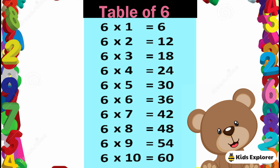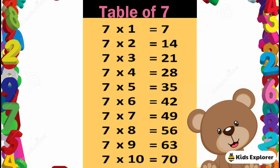Table of 6. 6 1's are 6, 6 2's are 12, 6 3's are 18, 6 4's are 24, 6 5's are 30, 6 6's are 36, 6 7's are 42, 6 8's are 48, 6 9's are 54, 6 10's are 60.